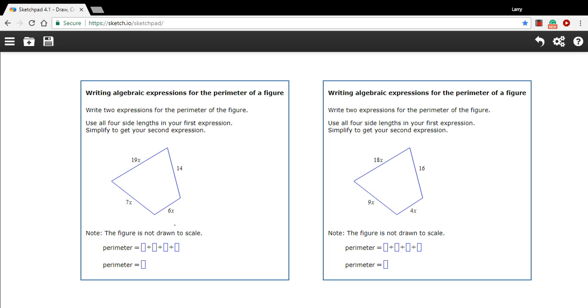This side is 19x, this side is 6x, and this side is just 14. We're going to have a mixture of variables and regular numbers, but that's okay.